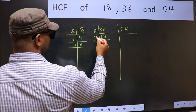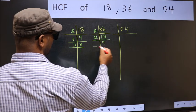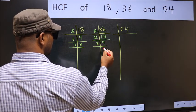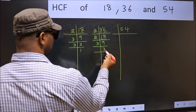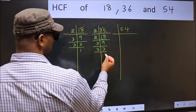Now 18 is 2 times 9. 9 is 3 times 3. Now 3 is a prime number, so 3 times 1.